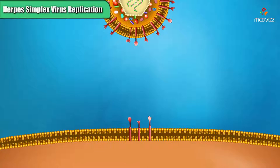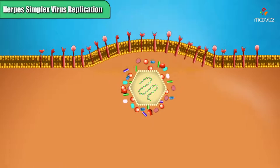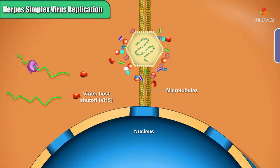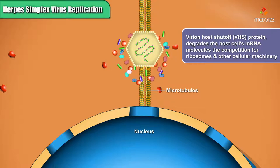The herpes virion can bind to several alternative receptor molecules in the host cell membrane, after which the envelope fuses with the host membrane, releasing the capsid into the cytoplasm. The capsid travels down a scaffold of microtubules to the nuclear membrane. At the same time, a protein from the tegument called virion host shutoff or VHS protein degrades the host cell's mRNA molecules and thereby eliminates the competition for ribosomes and other cellular machinery.